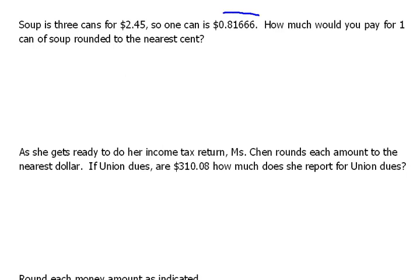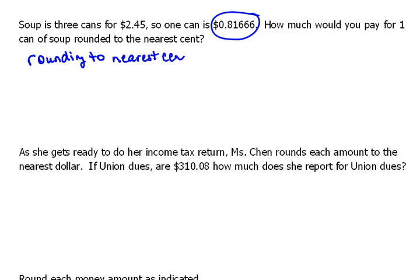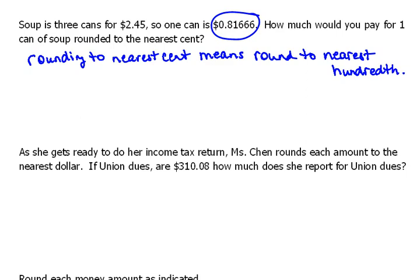This is what one can of soup is, but they want it rounded to the nearest cent. When we say cents, that means to two decimal places. Rounding to the nearest cent means round to the nearest hundredth — it's another way of saying round to the nearest hundredth.